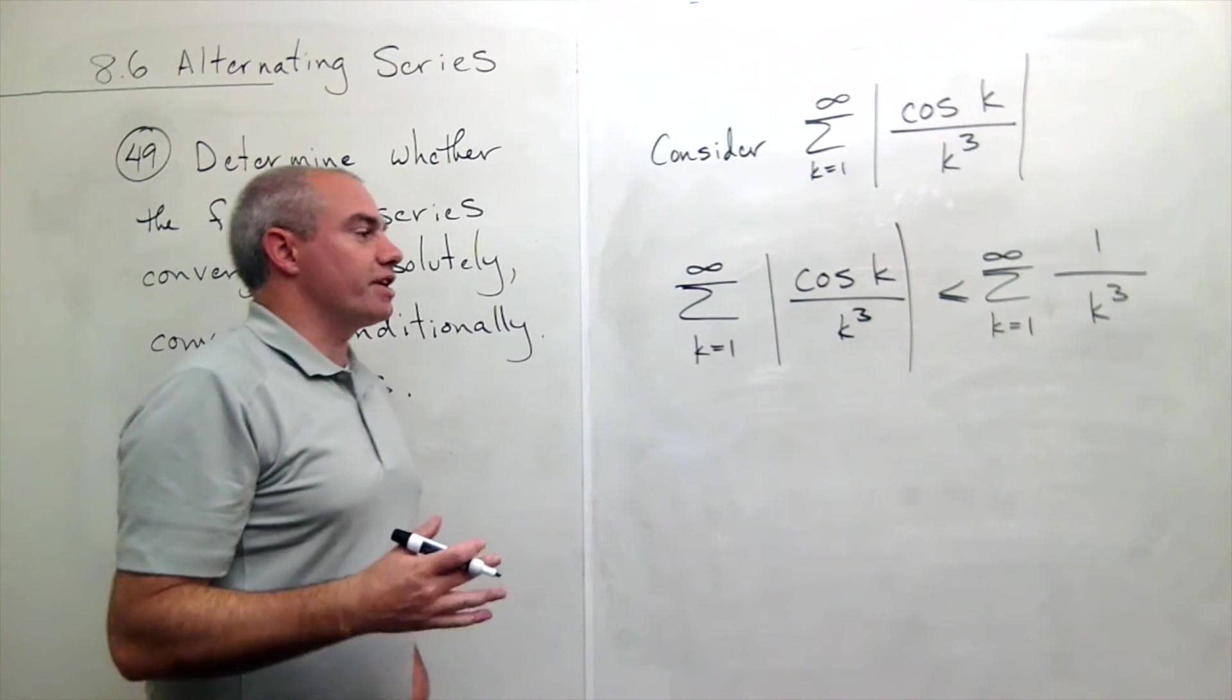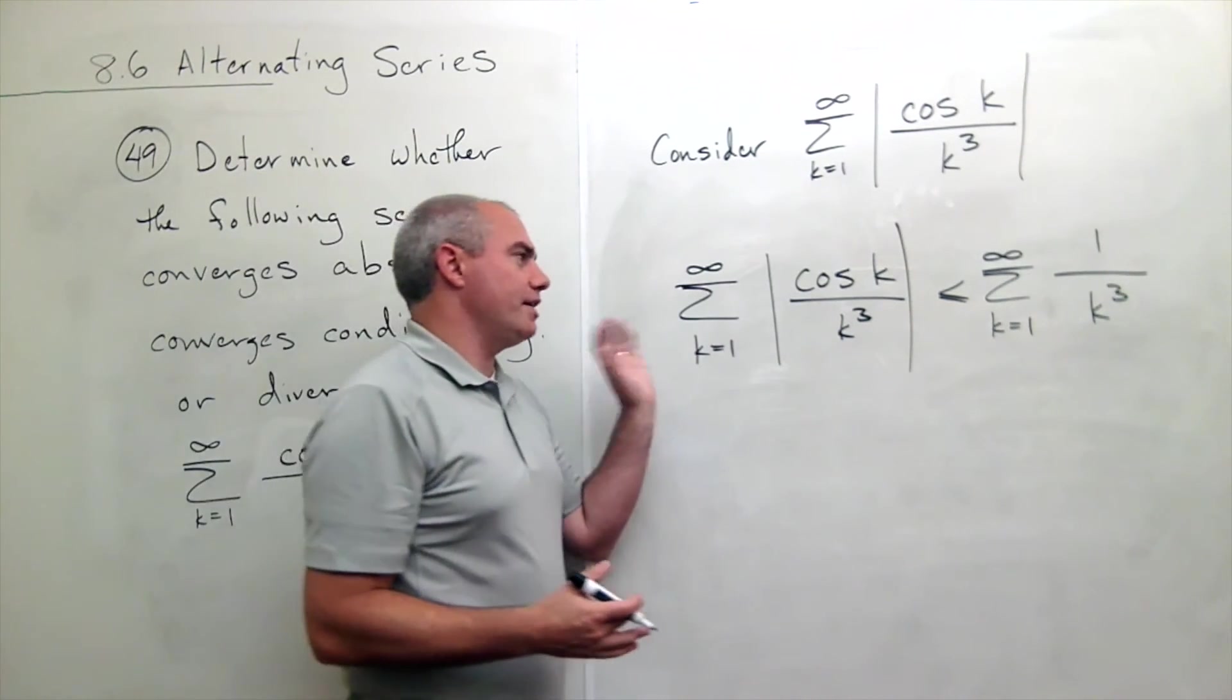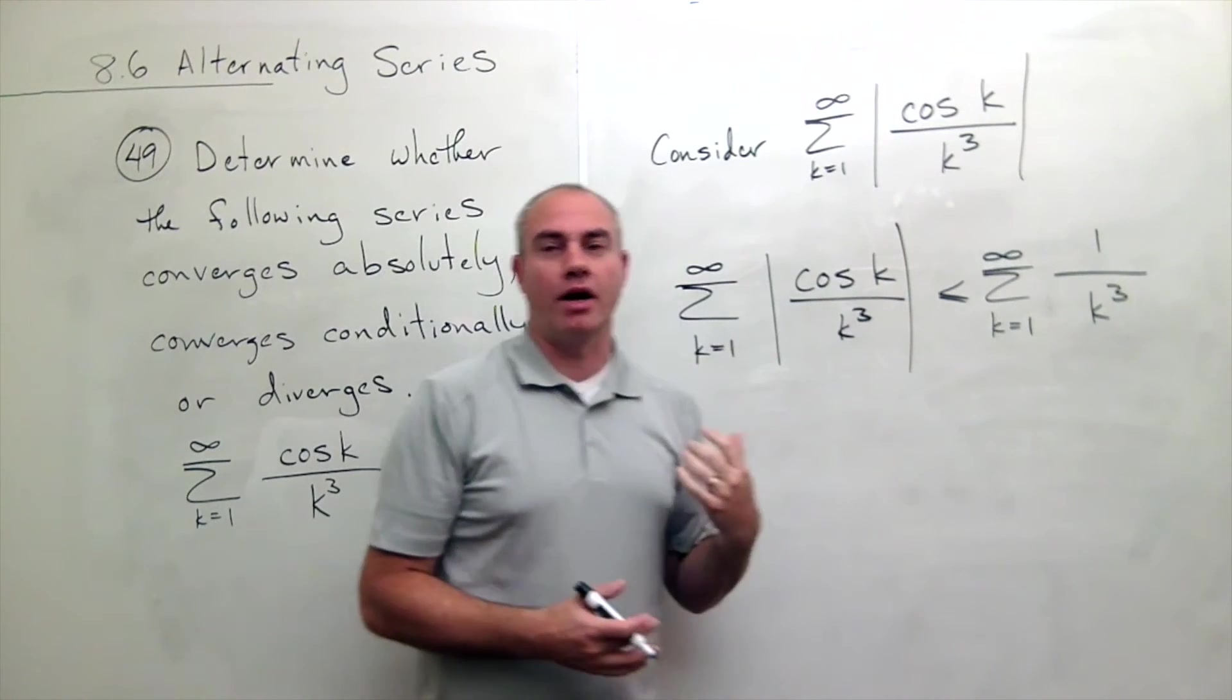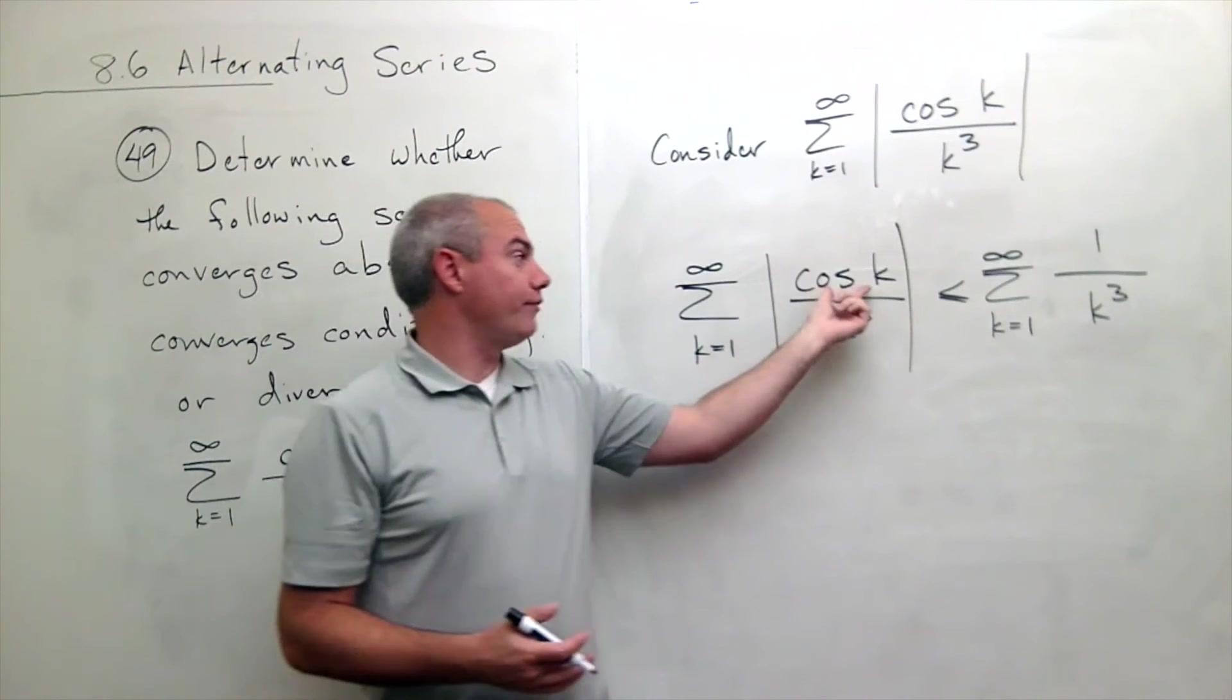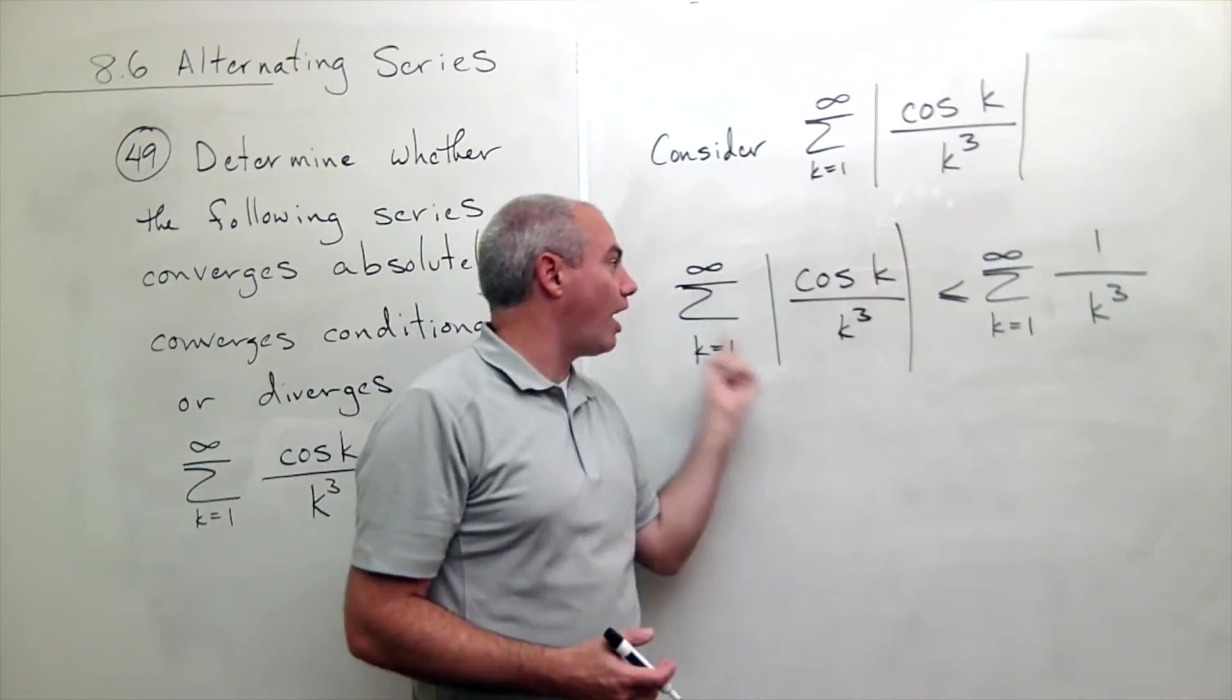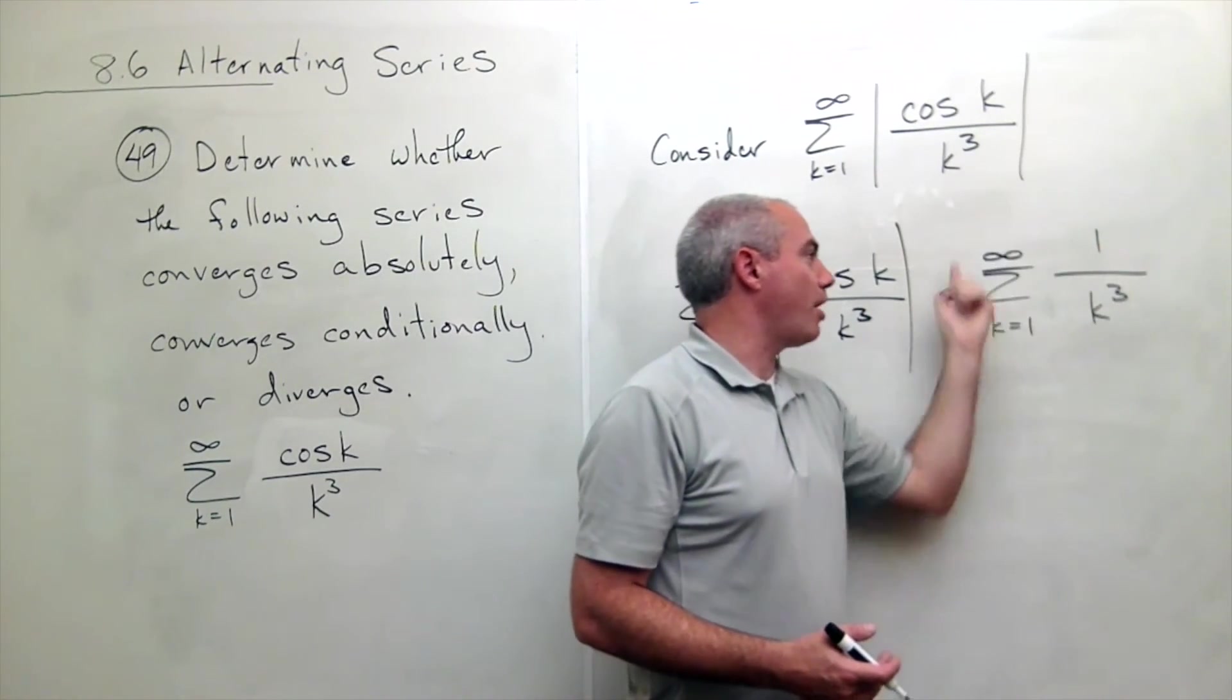So I'm kind of using a comparison test here. And what is going on? Well, I know that cosine is always less than 1, and all of these guys are positive. So I know that this positive sum is going to be less than or equal to this positive sum.